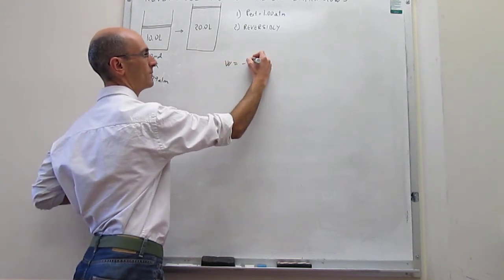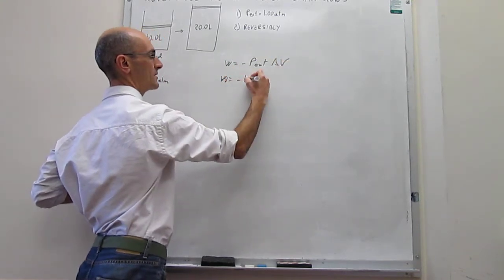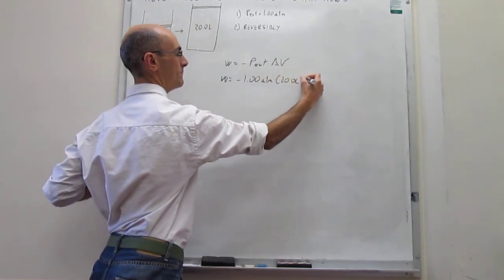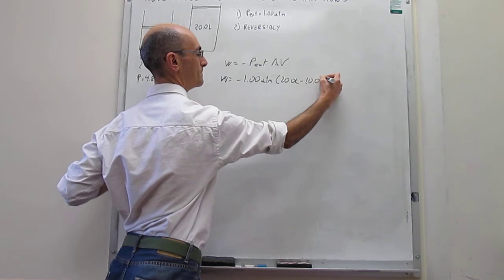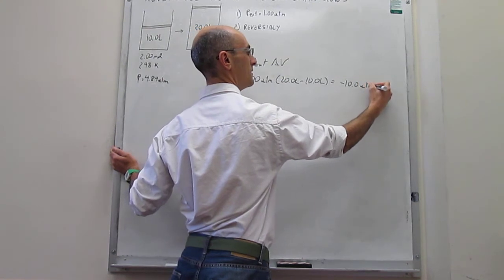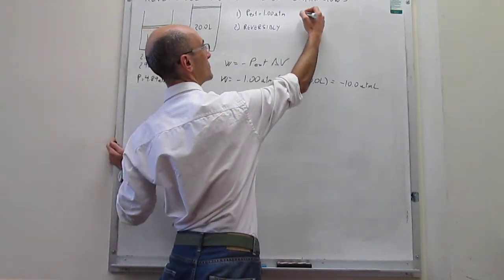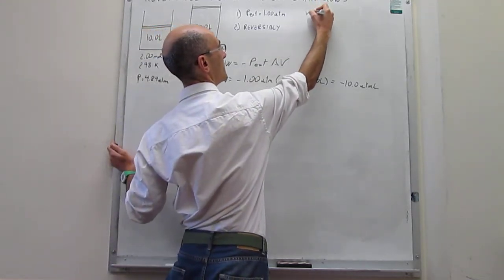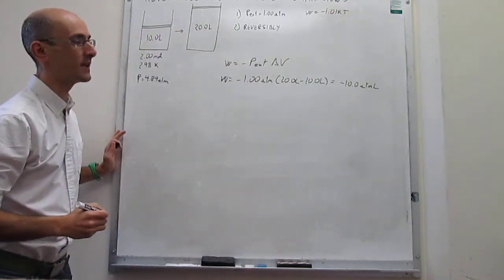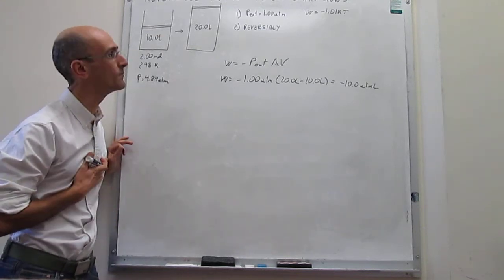Work is simply minus external pressure multiplied by the change in volume. The external pressure is one atmosphere and the change in volume is final volume minus initial volume. This is equal to minus 10 atm·L, which you can transform to joules to get −1.01 kJ. The work is negative because energy is being lost from the system to the surroundings as you push out that piston.